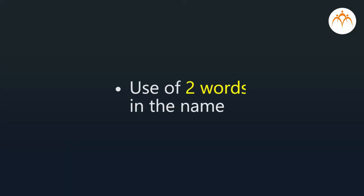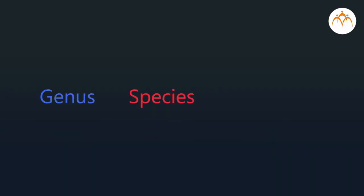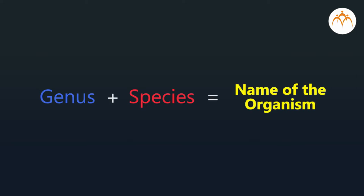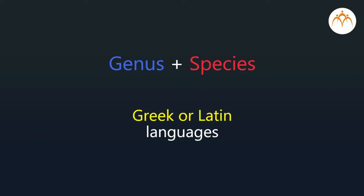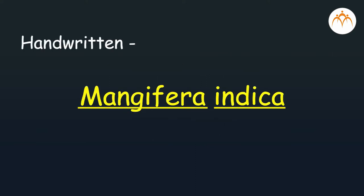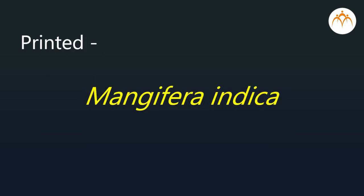Now we will see some important rules of binomial nomenclature. It makes use of two words in the name — the first word is the genus and the second word is the species. These words are taken from Greek or Latin languages. If handwritten, underline both words.